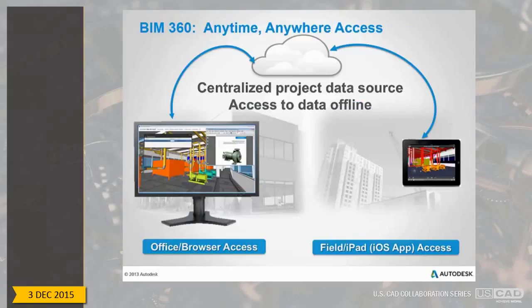The great thing about BIM 360 is they've made it accessible just about anywhere and at any time. If you have a computer with a web browser, you can access the data. And if you have an iPad, you can take it into the field on the job site and see project data while you're there — no need to go back to the trailer or lug around rolls of drawings. Just carry this little two-pound device and all the data you need is there.